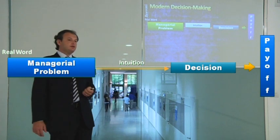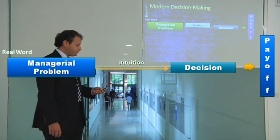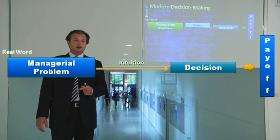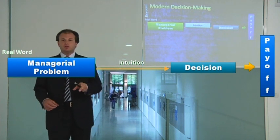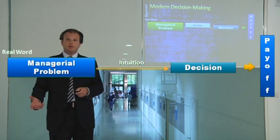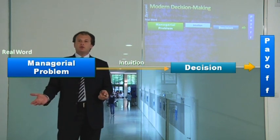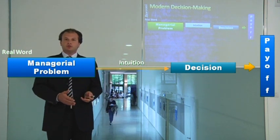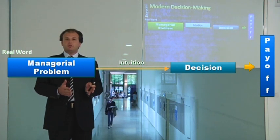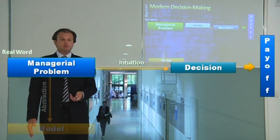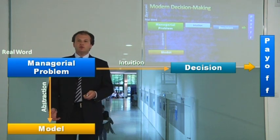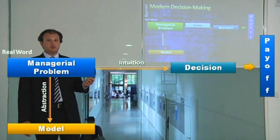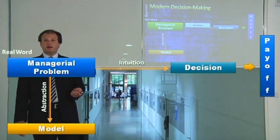The manager followed this path that you see on the slide for deciding: he had the problem, he followed his intuition, and he came to a decision. Actually he could be right. However, in many complex situations this cannot be the path that you follow. You need to follow another path in which you first develop a model — a model is an abstraction of reality.